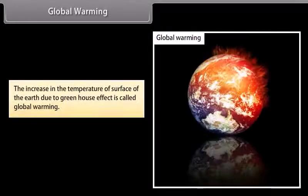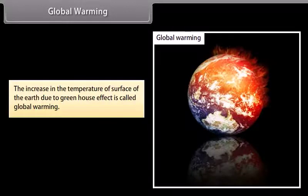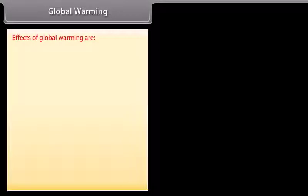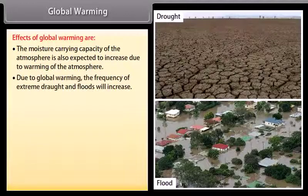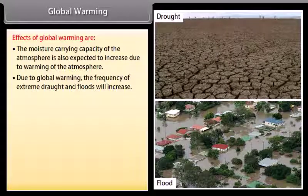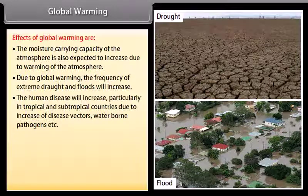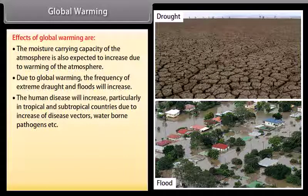The increase in the temperature of the surface of the earth due to the greenhouse effect is called global warming. Effects of global warming include: the moisture-carrying capacity of the atmosphere is expected to increase due to warming; the frequency of extreme drought and floods will increase; and human diseases will increase, particularly in tropical and subtropical countries, due to increased disease vectors, waterborne pathogens, etc.